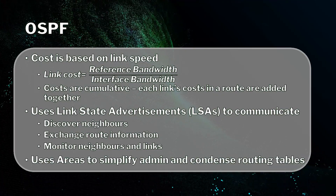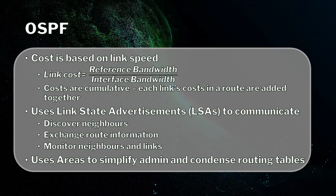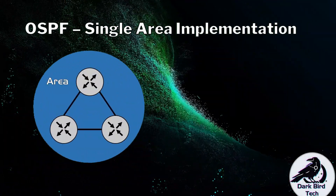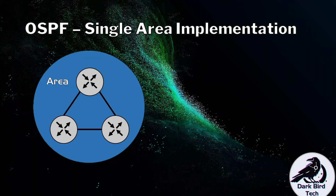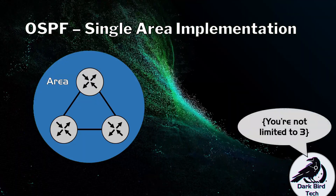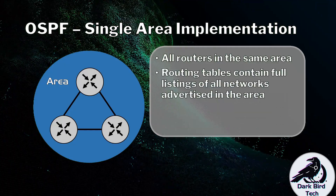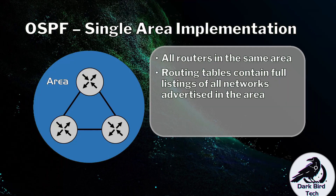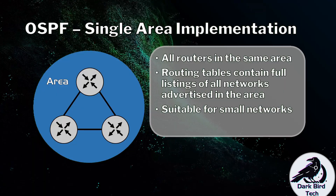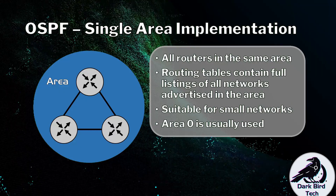OSPF also uses areas to help simplify administration and condense the routing table. The simplest form is a single area implementation: all routers in the same area will have full listings of every network advertised in that area via OSPF. This is typically done with small networks, often using area 0.